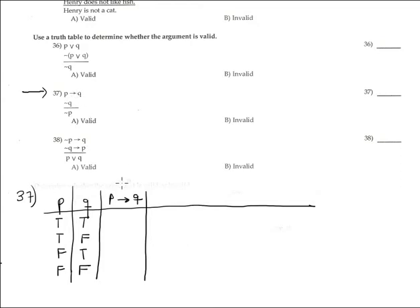We have two premises. This is premise number 1. In this case it's the conditional. The conditional is false only when the antecedent is true and the consequent is false — this is false. The rest is true. This is the true value for premise number 1.